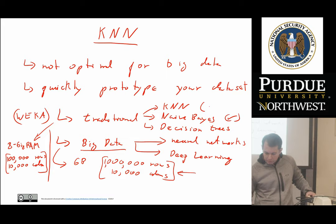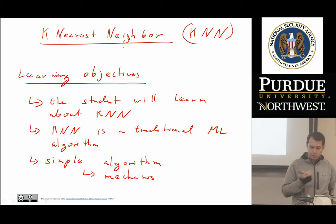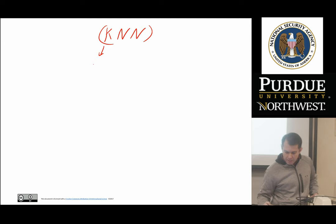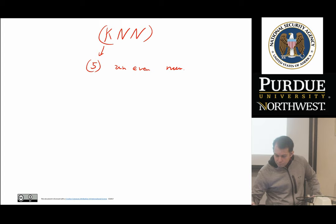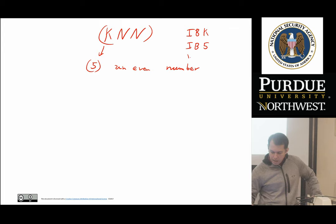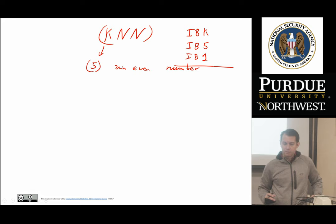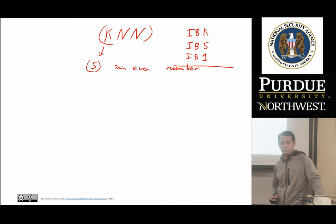Now that we know why we're using the traditional algorithms, let's focus on the how. The topic of this lecture is KNN, which stands for K-nearest neighbor. The K represents a variable, usually an odd number like 5. In WEKA this is called IBK — or some people call it IB5 or IB1 — just to indicate the value of K. KNN is one of the more straightforward algorithms and certainly one of the easiest to implement.